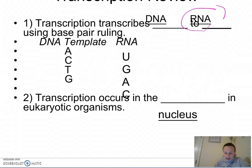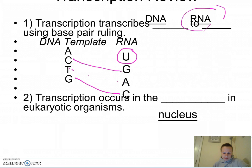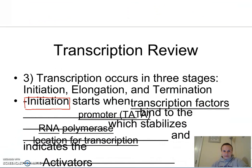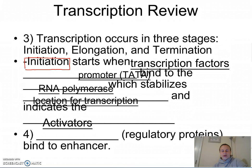So instead of A matching with T, A matches with U. C still matches with G, T still matches with A, and G still matches with C. Transcription occurs in the nucleus when we're talking about eukaryotes, because in prokaryotes they don't have a nucleus, so it takes place in their nucleoid region, which is in their cytoplasm.